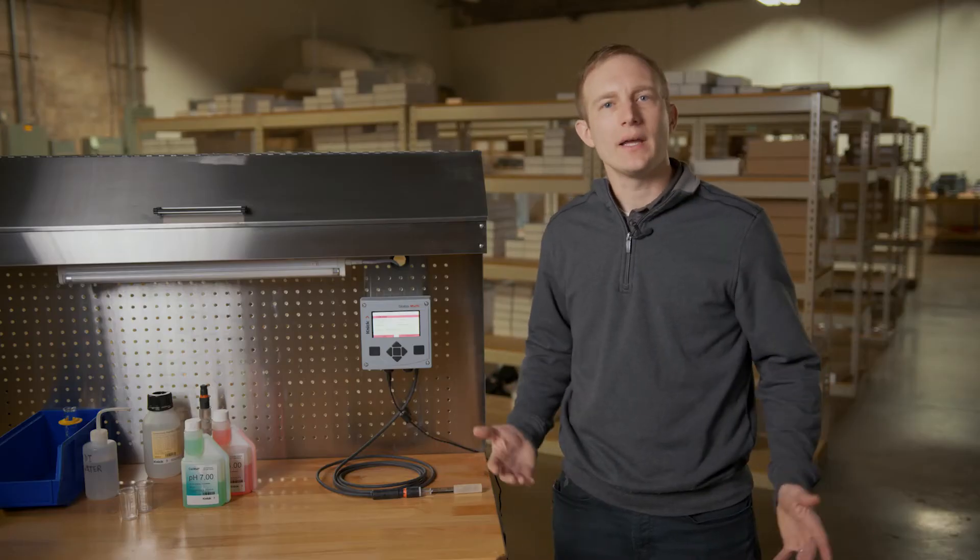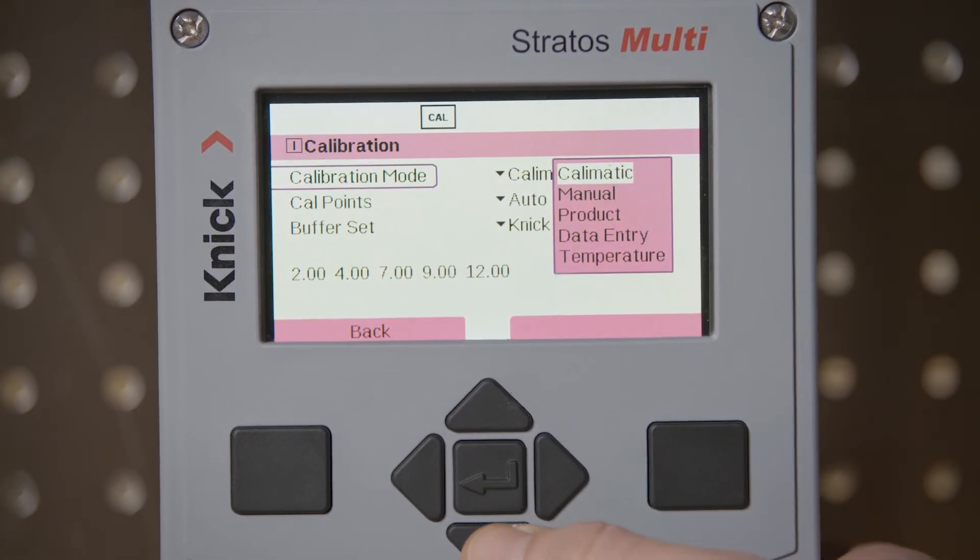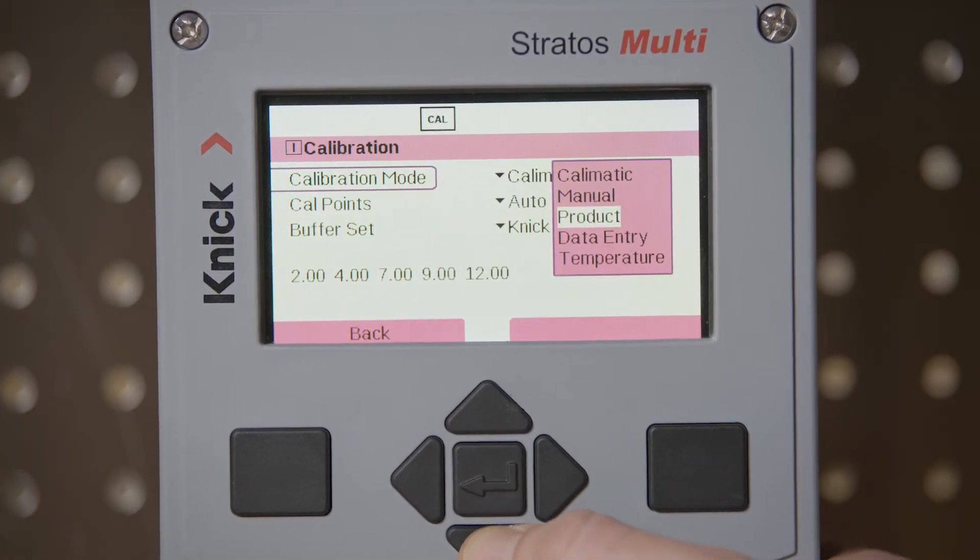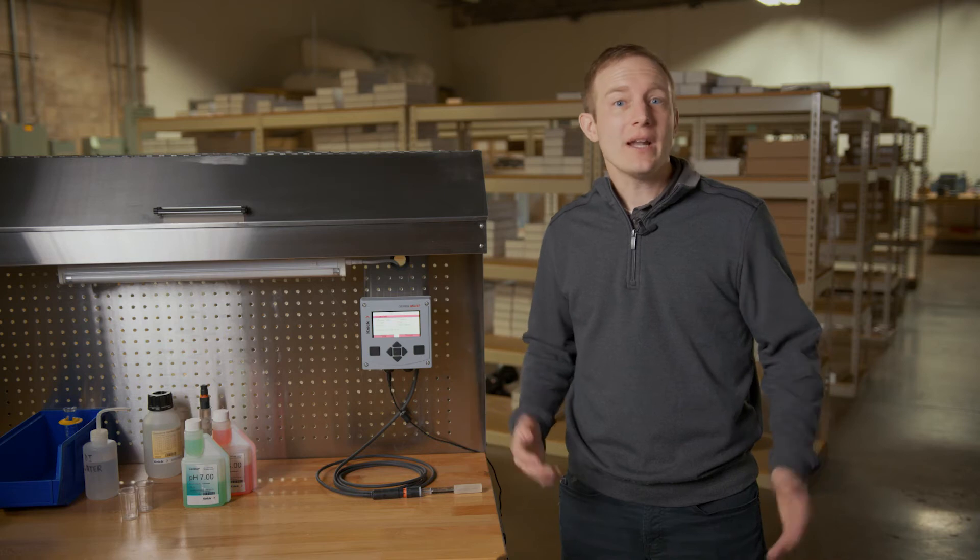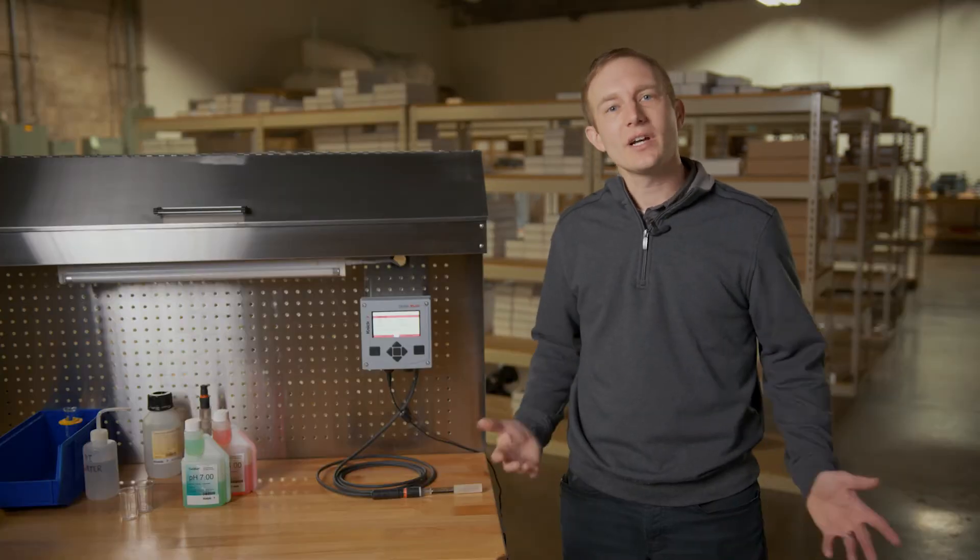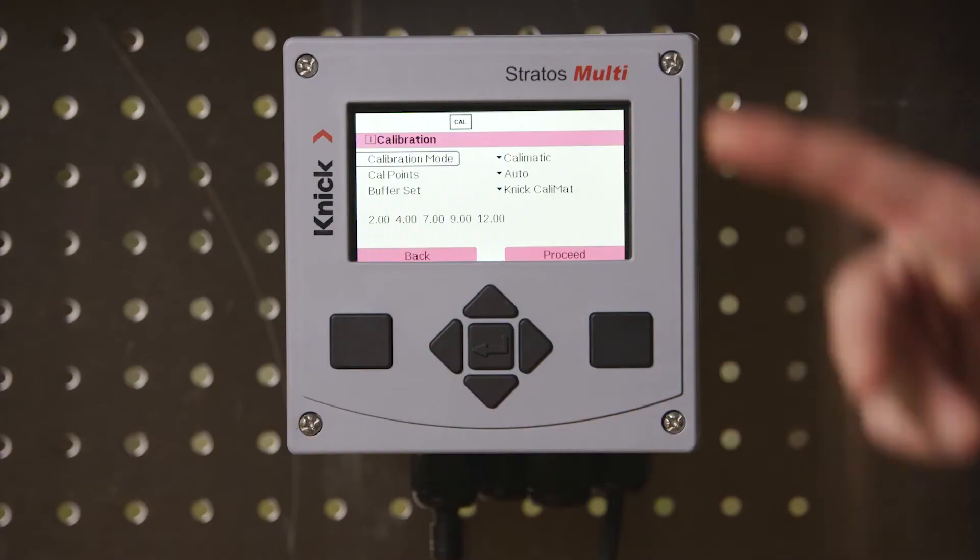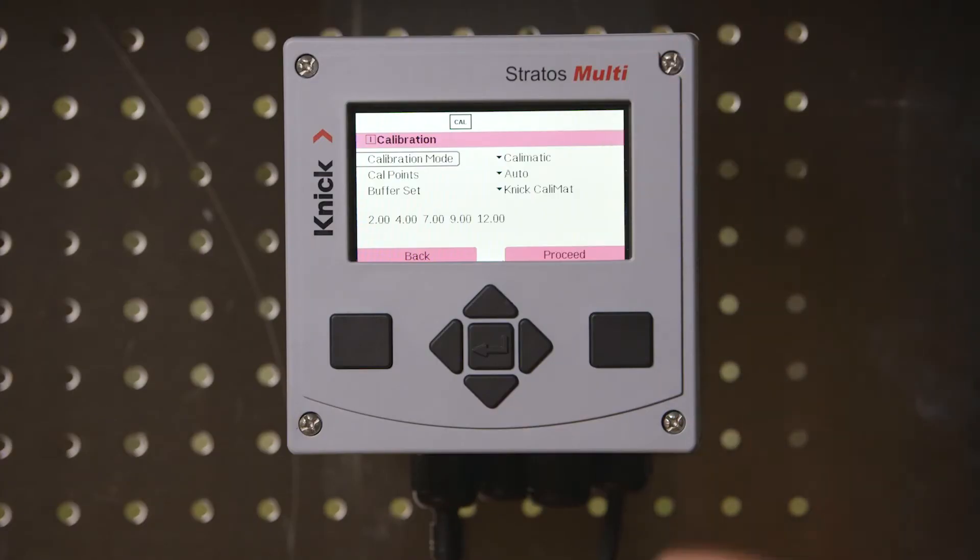We will be conducting a Calimatic or automatic calibration today but here you can see the different options available when performing a calibration. The Stratus Multi also allows us to perform a manual calibration, a product calibration or single point standardization, adjustment of the electrode slope and zero point via data entry, and lastly an adjustment of the internal temperature detector. We will ensure that Calimatic is selected here before proceeding further.